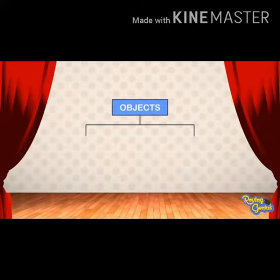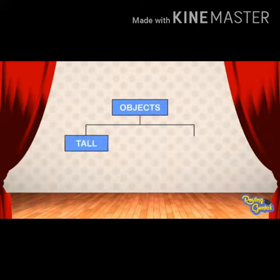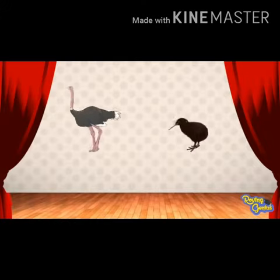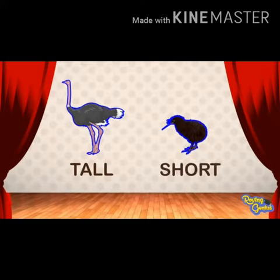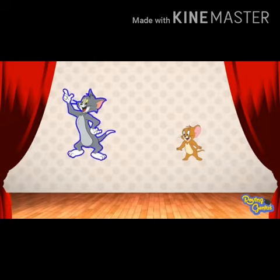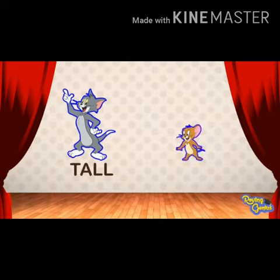Objects can be grouped as tall or short. The ostrich is a tall bird, while the kiwi is a short bird. Tom is tall. Jerry is short.